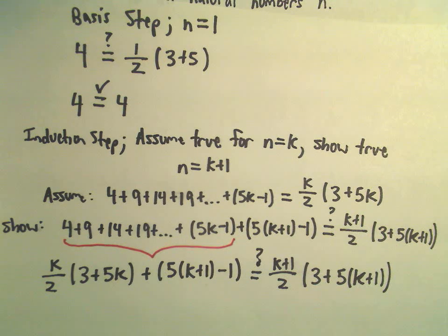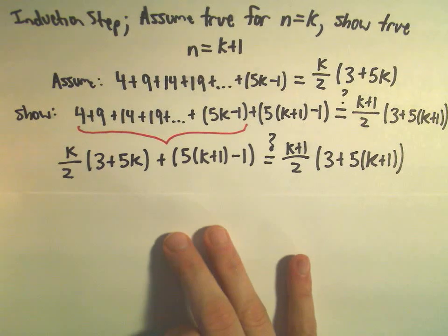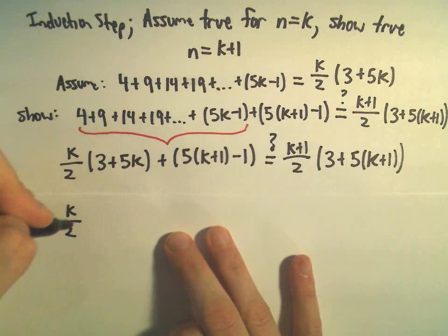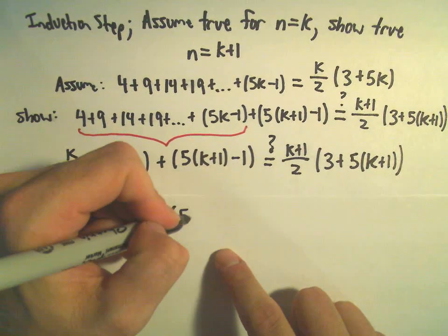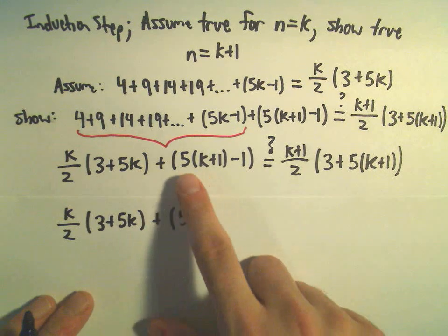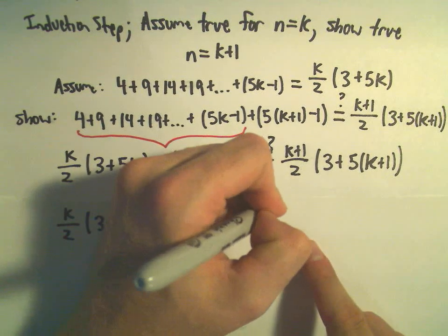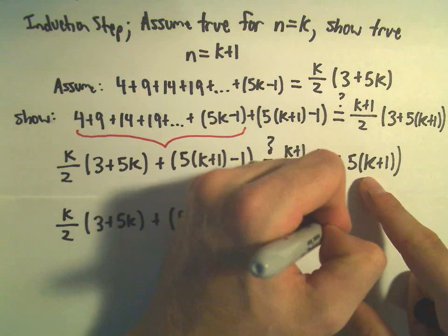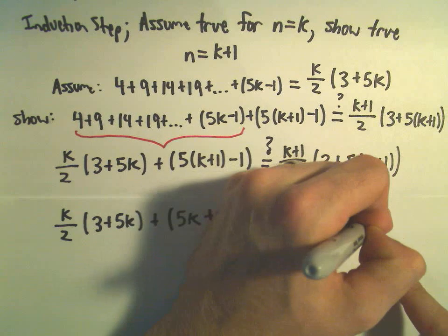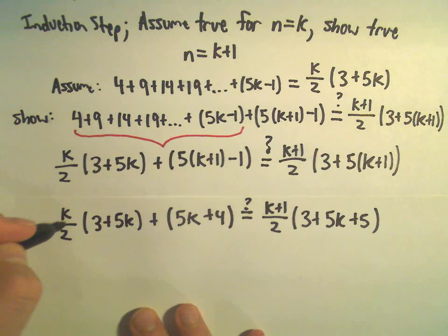Typically what I do here is clean up both sides, collect like terms, and see if these things are in fact equal. So by our induction assumption, the first part 4 plus 9 plus 14 plus 19 plus dot dot dot plus 5k minus 1 gives us k over 2 times 3 plus 5k. We still have the additional term 5 times k plus 1 minus 1. k over 2 I'll leave alone; inside the parentheses we distribute to get 5k plus 4. On the right side we have k plus 1 over 2, and inside we have 3 plus 5k plus 5.